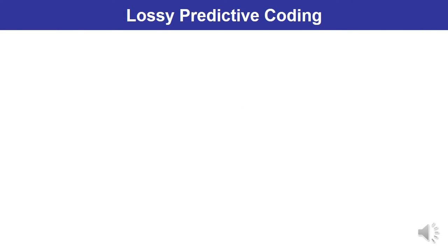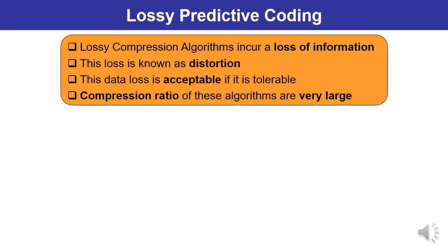Lossy compression algorithms incur a loss of information. This loss of information is known as distortion.